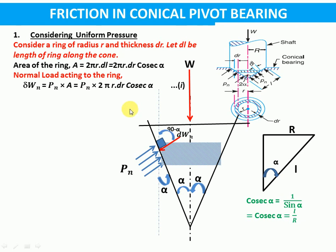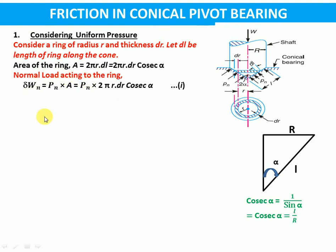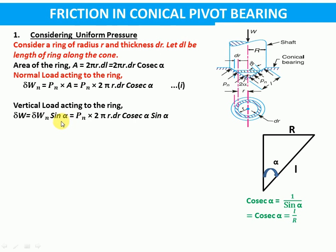So this force which is vertically downward, that is dW, will be dWn times sine alpha, because it equals dWn times cos(90 minus alpha), and cos(90 minus alpha) equals sine alpha. So we have taken a normal load acting on the ring as dWn, but the vertical load acting on the ring will be dWn times sine alpha, which equals pn times 2πr·dr·cosecant alpha times sine alpha. Since cosecant alpha is 1 upon sine alpha, the sine alpha and cosecant alpha cancel each other, giving the vertical load as 2πr·dr·pn.